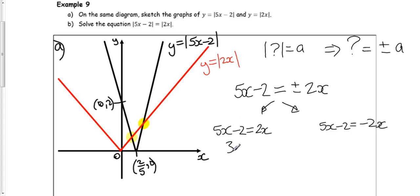Let's quickly solve these. We get 3x equals 2, so x is 2 thirds. And on the other one, 7x equals 2, so x is 2 sevenths.